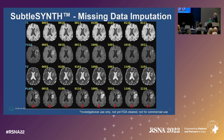One of the interesting rows is T1-GAD. Remember, all of these images were synthesized from images acquired before contrast. You can see that if you only have a FLAIR to use for reconstruction, you don't do such a great job. But if you have all of the pre-contrast imaging, you actually do a pretty nice job.